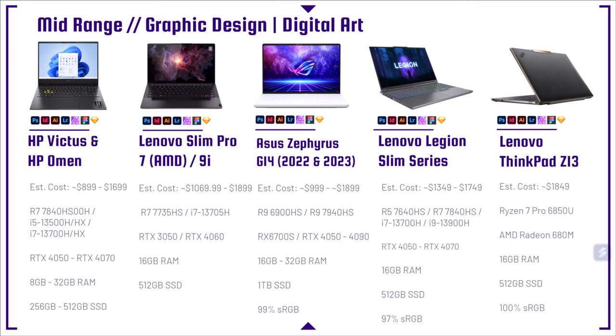Next up is the Lenovo Legion Slim Series — one of my favorite 16-inch laptops you can buy. It comes in a ton of different SKU variations, so whether you're a Ryzen or Intel fan, you're really covered. This year they've also come out with the new Slim 5; in the past it's only been the Legion Slim 7. I have one I'm going to unbox soon. I'm guessing the Slim 5 will be more plastic materials where the Slim 7 is that really awesome aluminum build quality, so I think the Slim 5 is just a budget-friendly option to save a little money.